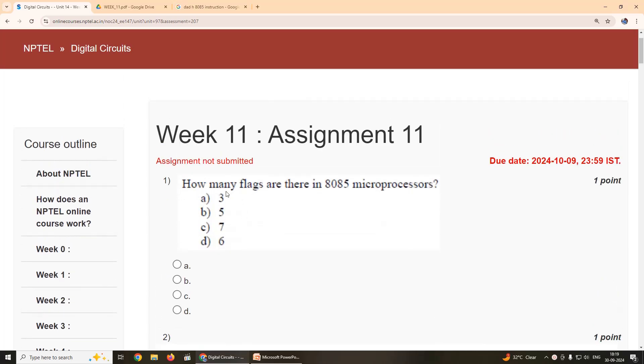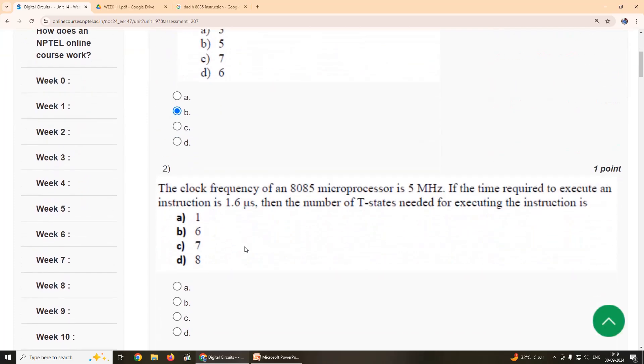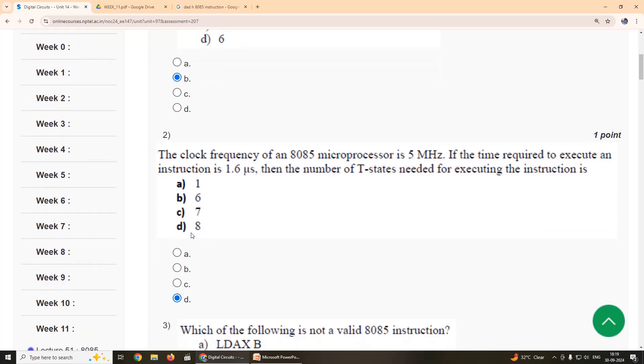First question: How many flags are there in 8085 microprocessors? Our suggestion is option B, 5. The clock frequency of an 8085 microprocessor is 5 MHz. If the time required to execute an instruction is 1.6 microseconds, then the number of T states needed for executing the instruction is. So the answer for this is option D. Our suggestion is option D, 8.